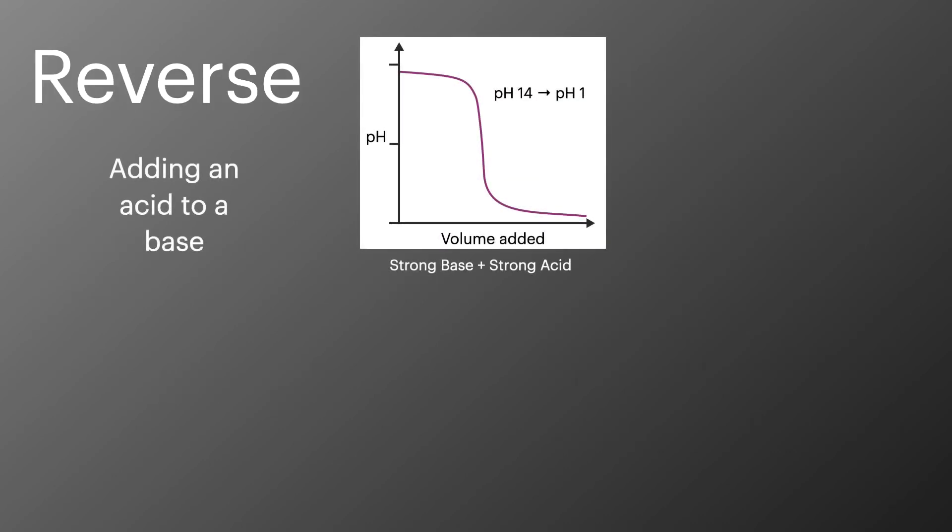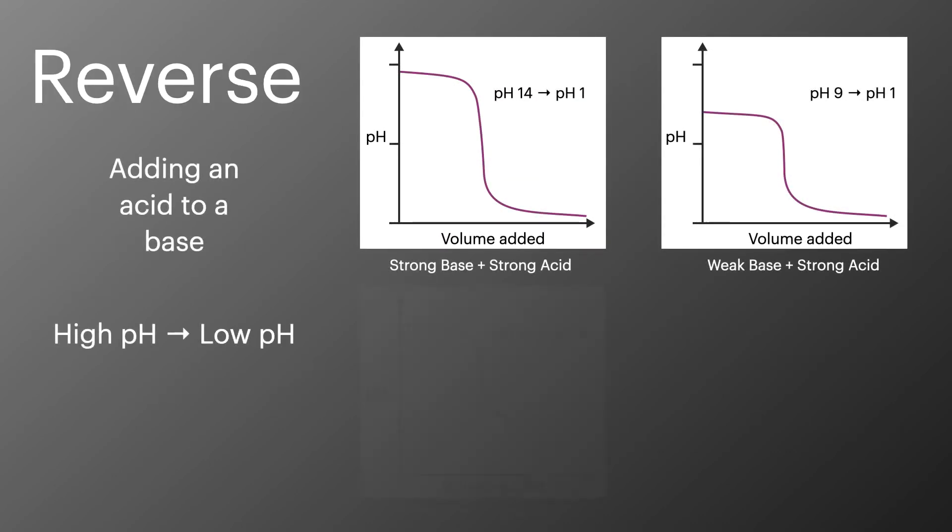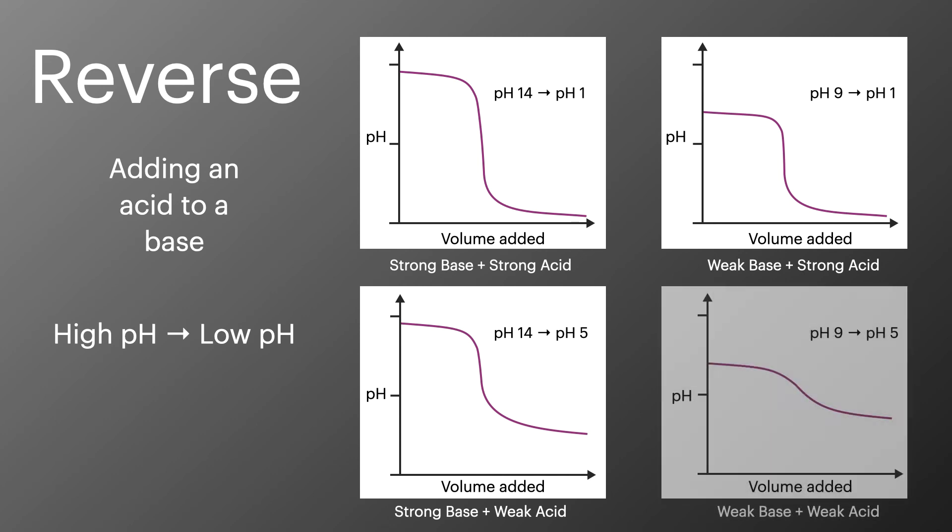It is of course possible to carry out these titrations the other way around, where an acid is added to a basic solution. In this case we start with a high pH and then through the course of the addition we end with a lower pH. The pH curve for this process is just the opposite way around.